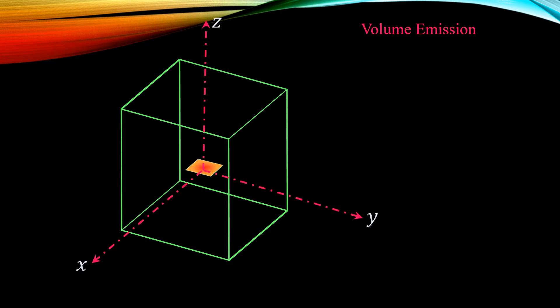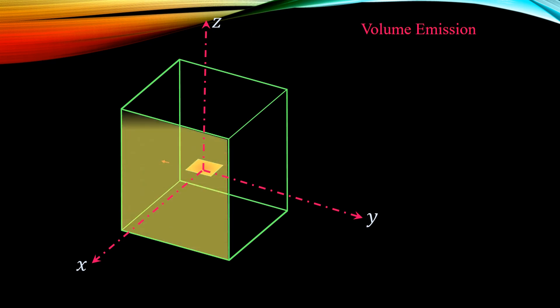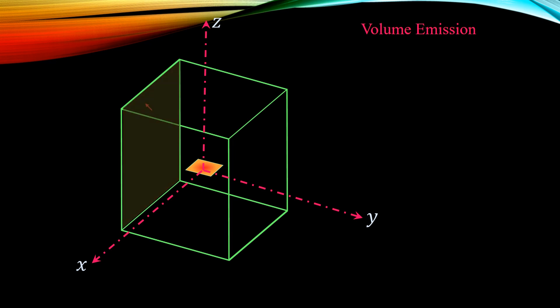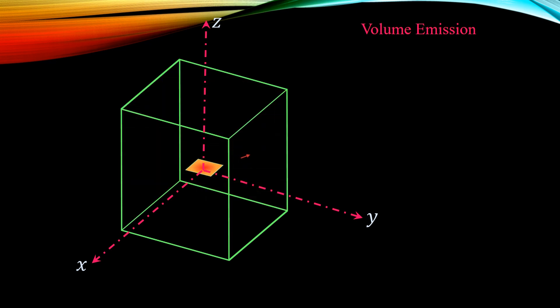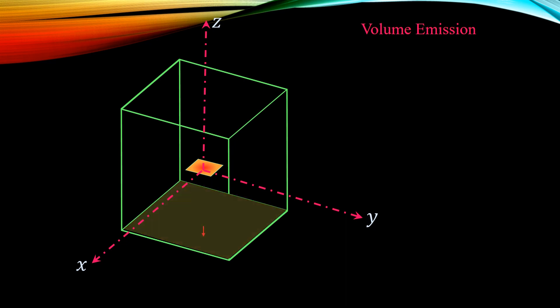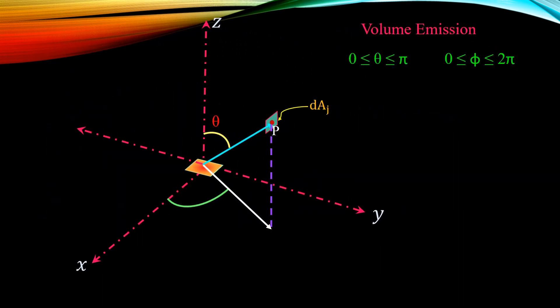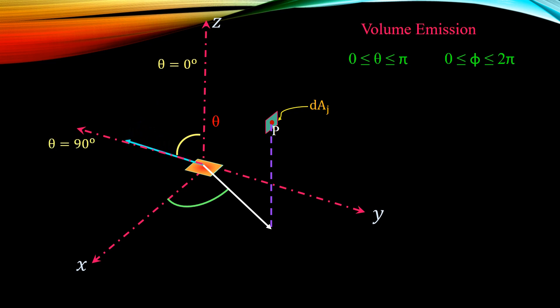Let's move to the volume emission case. Here the source emitting radiation is at the center of a cubicle enclosure instead of any boundary. The radiation emitted from this source can reach the front boundary, left boundary, back boundary, right boundary, top boundary, and bottom boundary — meaning radiation can be emitted in all directions. As we move towards the z-axis, theta angle decreases towards 0 degrees; moving away, theta increases and reaches 90 degrees at the y-axis. In the volume emission case, emission can take place below the source.